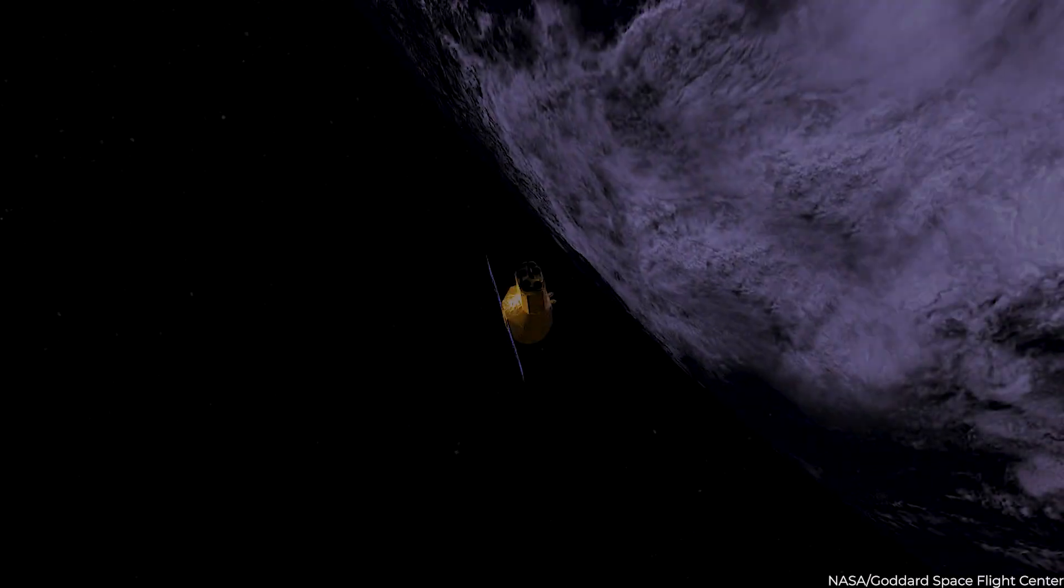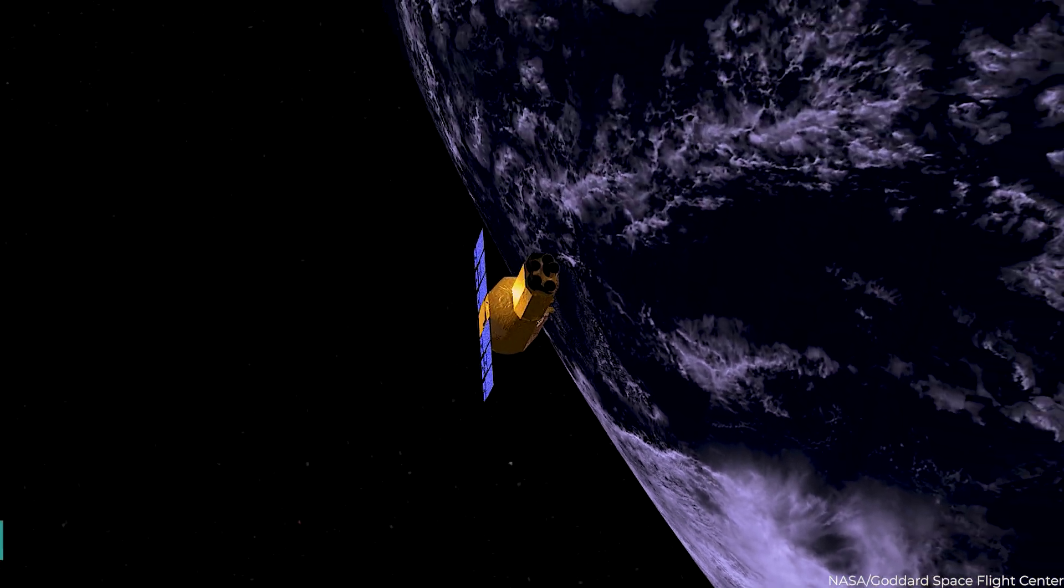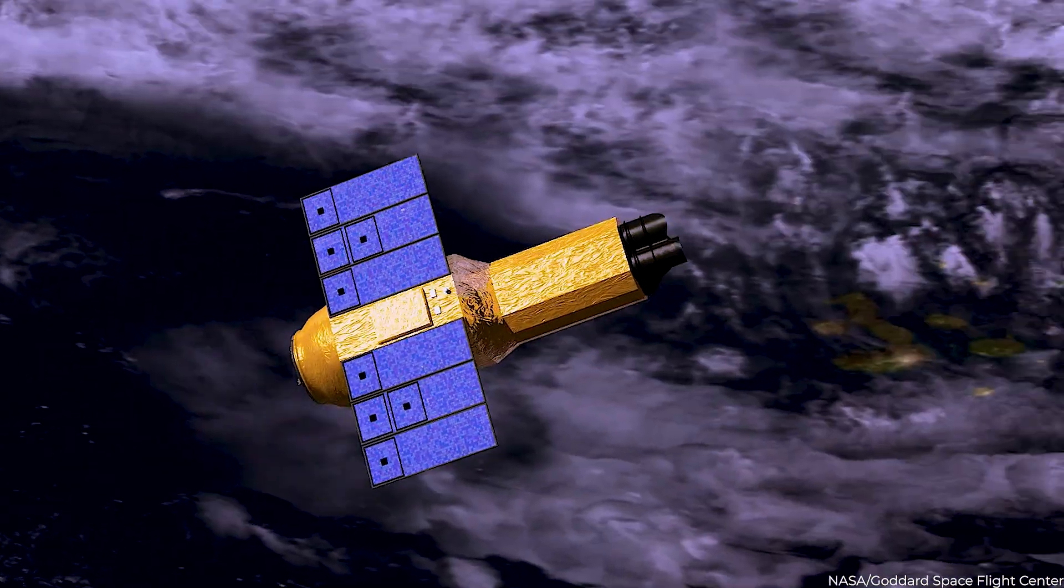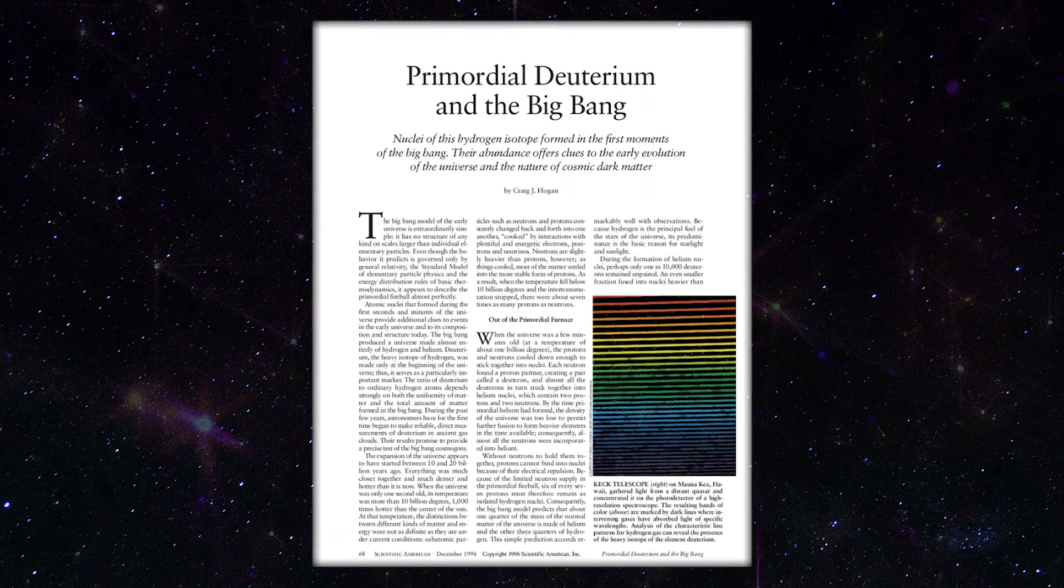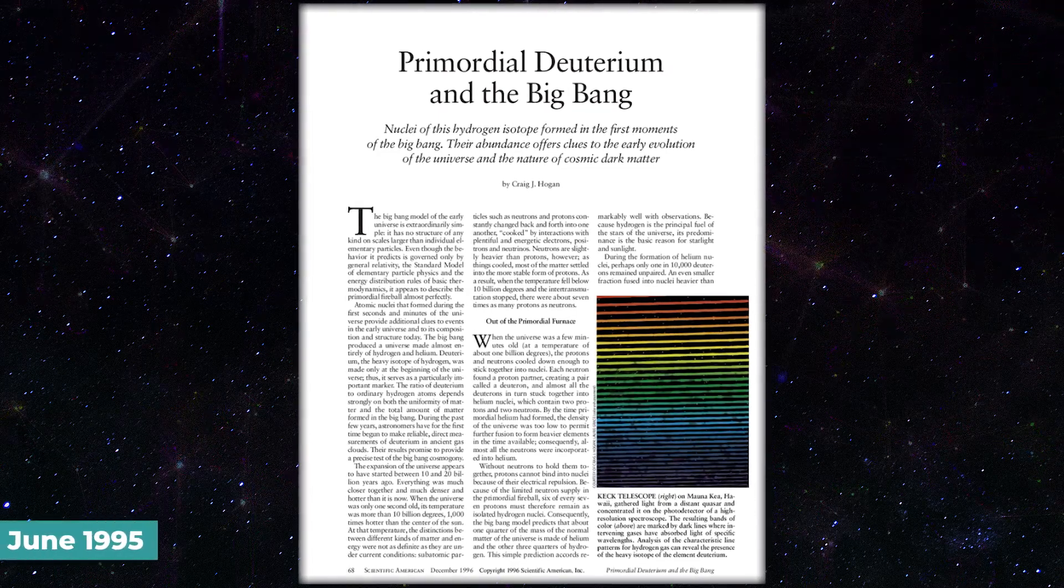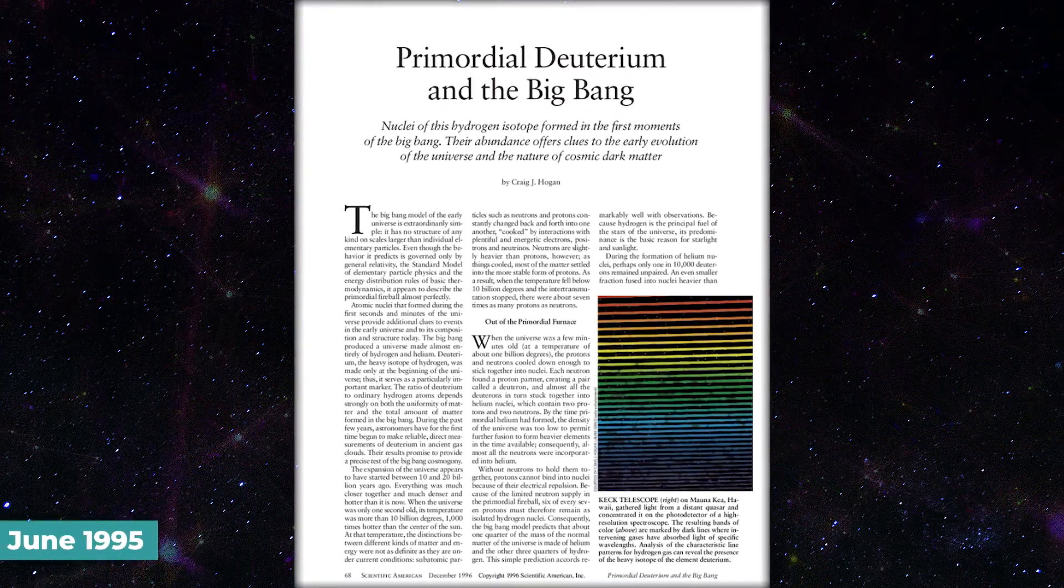NASA discovered some astonishing findings that provide support for the Big Bang idea. Most notably, scientists using the Astro-2 Observatory validated one of the conditions for the Big Bang as the basis of the cosmos. Scientists discovered primordial helium, such as deuterium, in the remote reaches of the cosmos in June 1995.